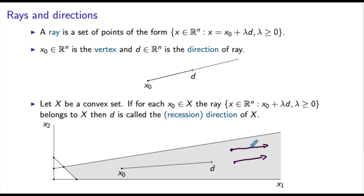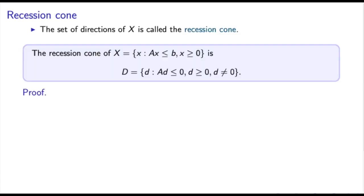If our problem is unbounded, this can be shown by finding a recession direction along which the objective tends to plus infinity for a maximization problem, or negative infinity for a minimization problem. Therefore we need to characterize the recession directions of an arbitrary polyhedral set. The set of all directions of X is called the recession cone, and the next theorem provides this characterization.